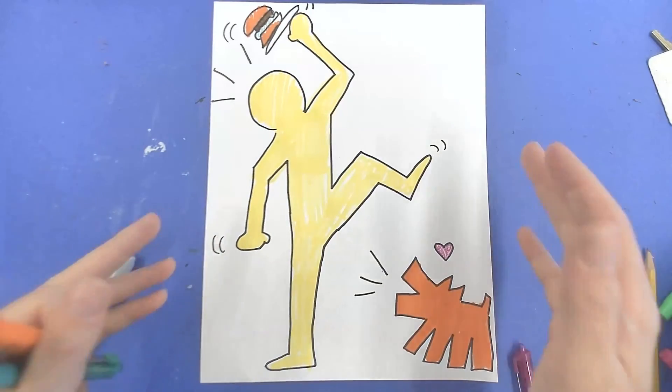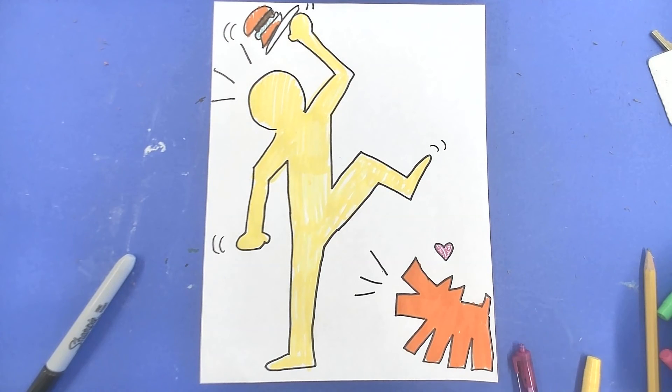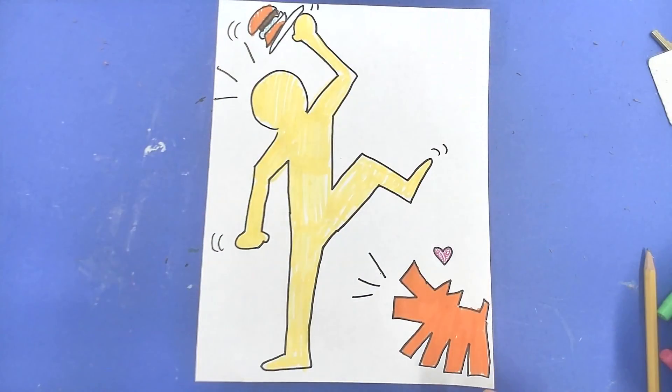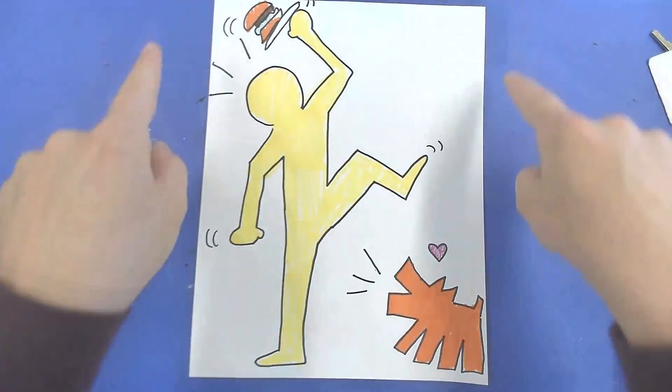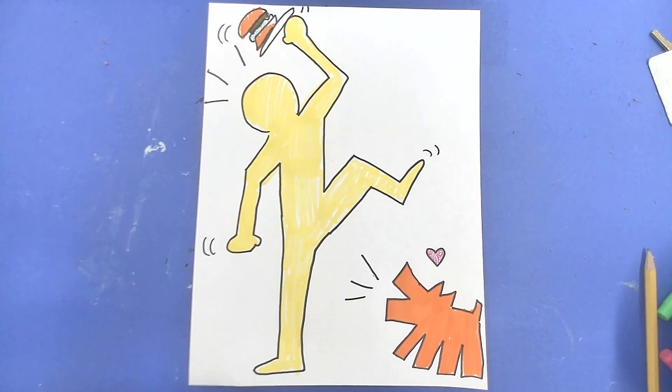So your job is to put two characters in a picture that gives me an idea of something happening, such as maybe they're dancing. Are they getting along? Is one excited? Is the other sad? Is one happy? Is the other confused? Use Keith Haring's style. Give me a little, almost like a one panel comic strip. And then make sure to send me a picture when you're done.